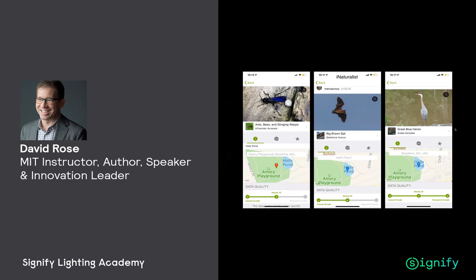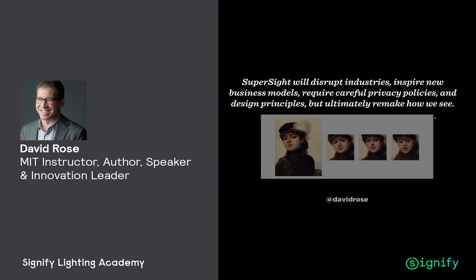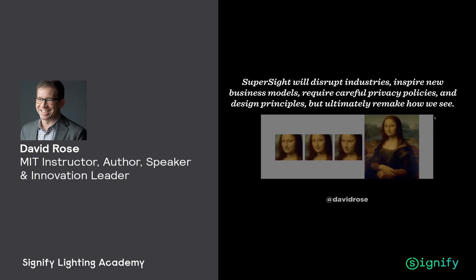To get a sense of this yourself, I would really recommend downloading an app called iNaturalist, which gives you a way to understand how the natural world can be labeled for you. Our interaction with technology will change as things in front of us will be labeled and we can take action on those things — or even hide things from view that we don't want to see. Diminished reality.